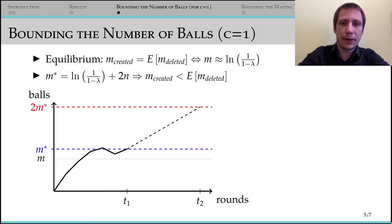And having less balls than expected is of course only to our advantage, so we don't need a lower bound.